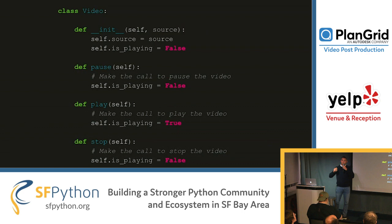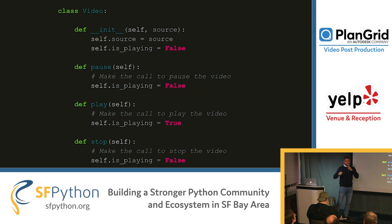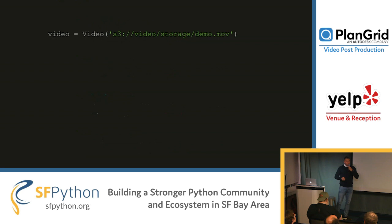Here we have a video class where the constructor receives a source — the source of the video. It initializes an attribute called source with the given source, but it also initializes an attribute called is_playing, which is initialized as false because the video is not playing the moment we create an instance. This class also provides three functions: pause, play, and stop. The important part here is the is_playing line. When we call pause, is_playing is set to false. When we call play, is_playing is set to true. When we call stop, is_playing is set to false.